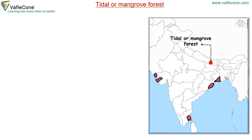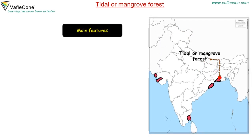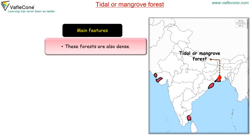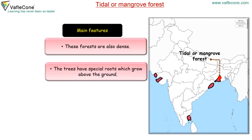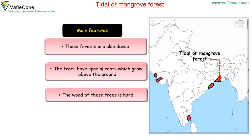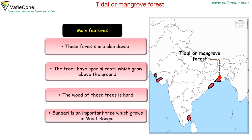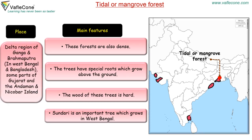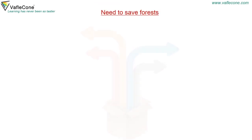Tidal or Mangrove Forest: These forests are also dense. The trees have special roots which grow above the ground. The wood of these trees is hard. Sundari is an important tree which grows in West Bengal. They are found in the delta region of the Ganga and Brahmaputra, in West Bengal and Bangladesh, and some parts of Gujarat and the Andaman and Nicobar Islands.